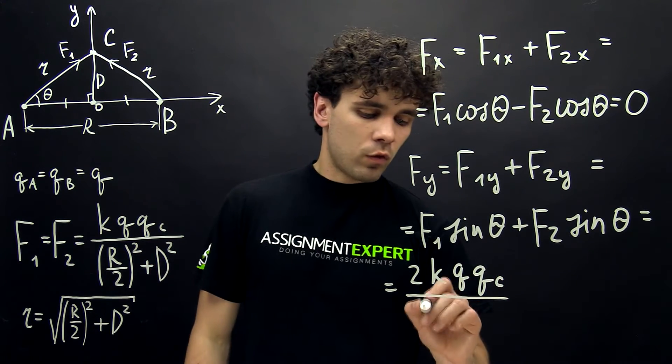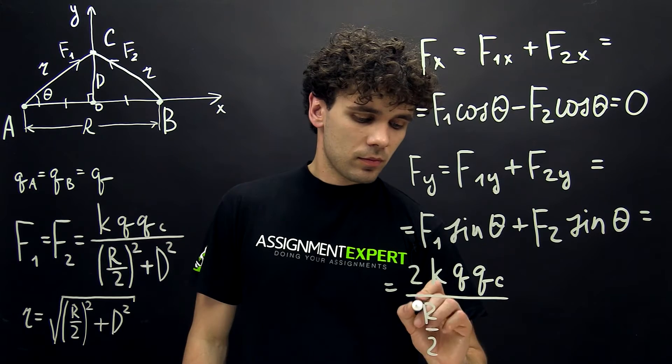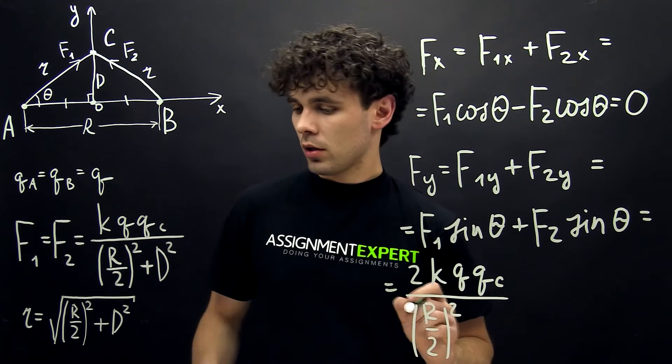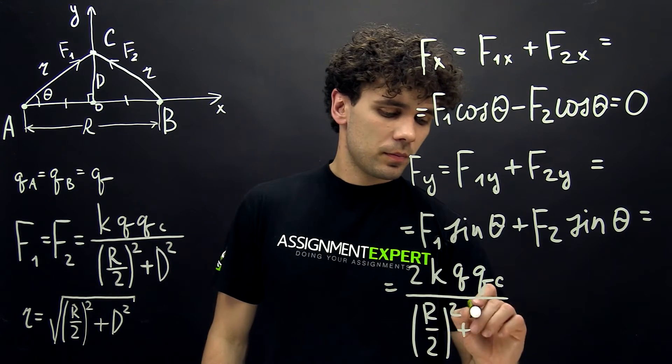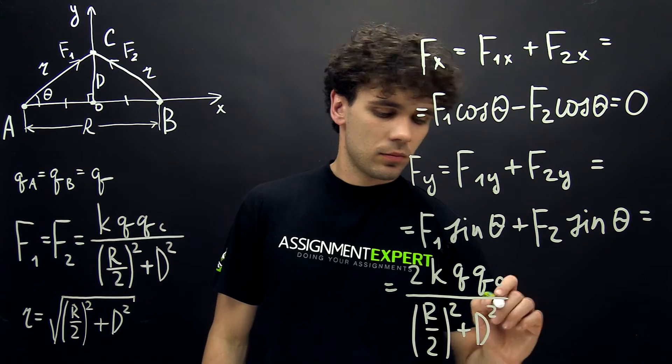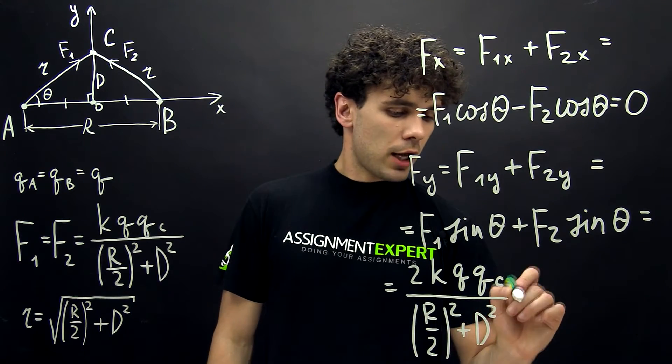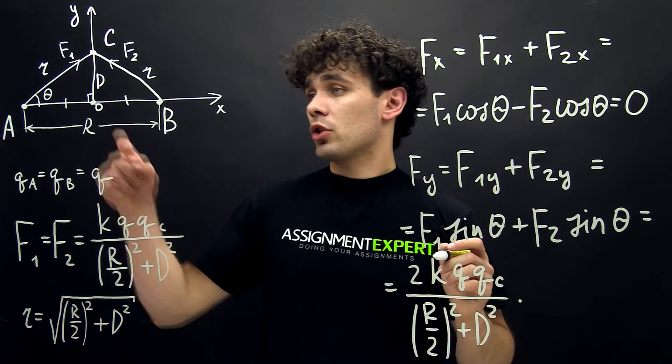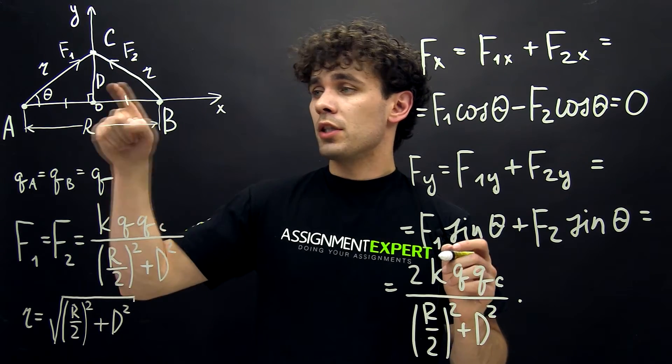Over (R over 2) squared plus D squared. And then we have sine theta, which from this triangle will be D